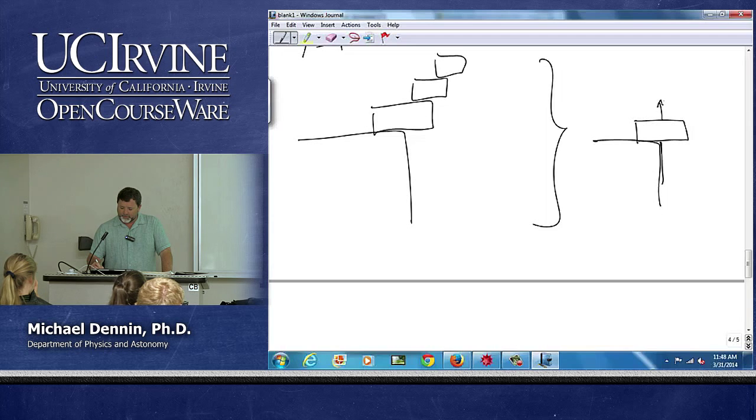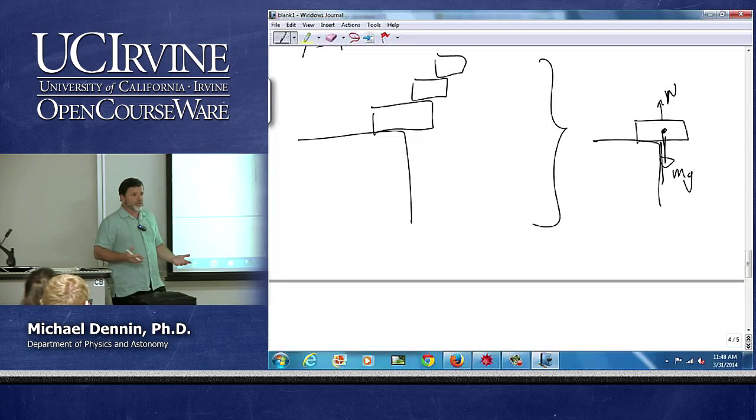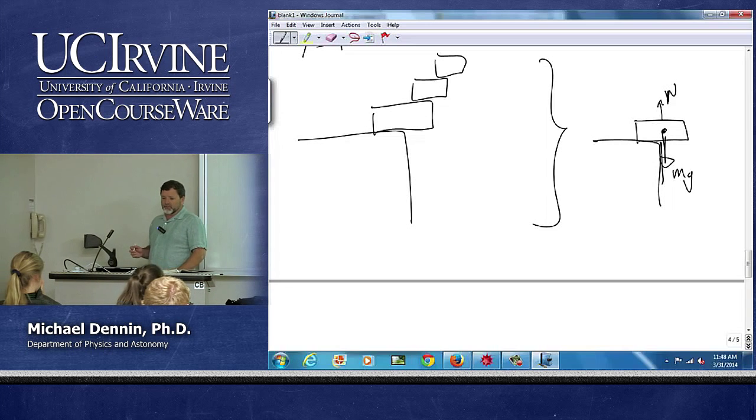So you have a normal force up from the table and you have an mg down from its weight, and you want them aligned with each other and then you get zero torque. So that's the first block.